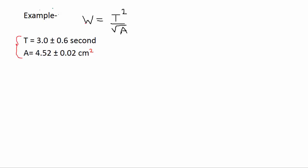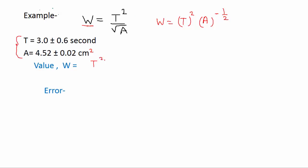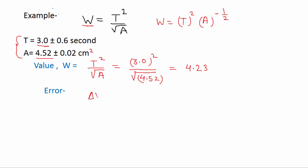Let's take an example. Two quantities are given: time and area. We have to find a new quantity w equals t squared divided by square root of a. We can write w as t raised to the power 2 times a raised to the power minus one-half, since the square root means power half, and being in the denominator makes it negative. First we find the value of w: t is 3.0 s, a is 4.52, which gives us w equals 4.23.